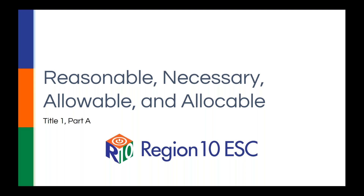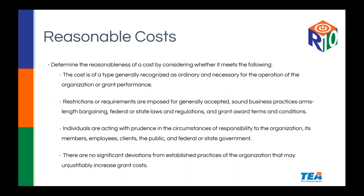When looking at what's considered reasonable, the agency's checklist says: determine reasonableness by checking whether the cost is of a type generally recognized as ordinary and necessary for the operation of the organization or grant performance; restrictions or requirements are imposed for generally accepted sound business practices; individuals are acting with prudence; and there are no significant deviations from established practices.